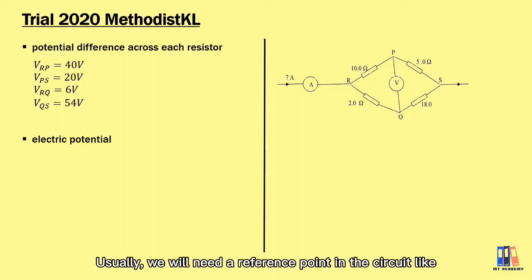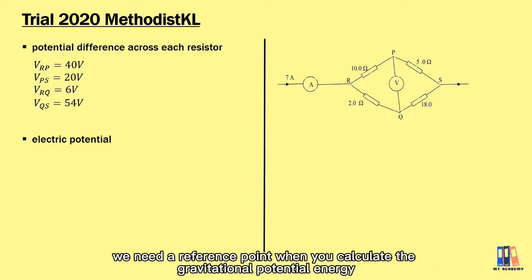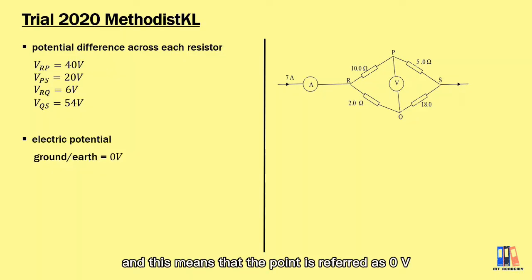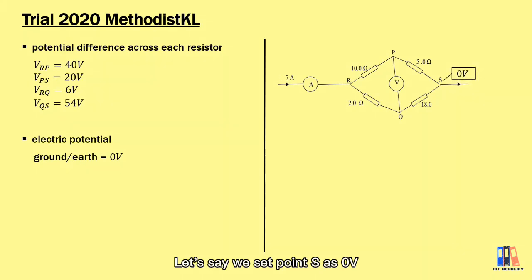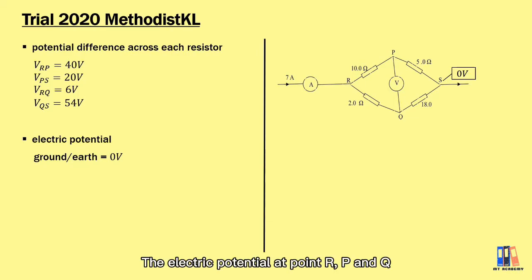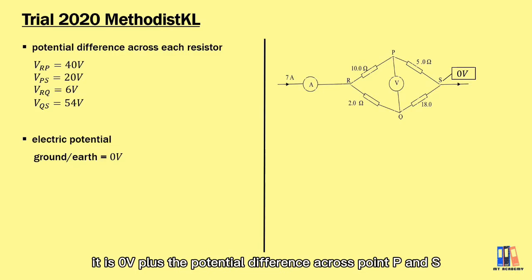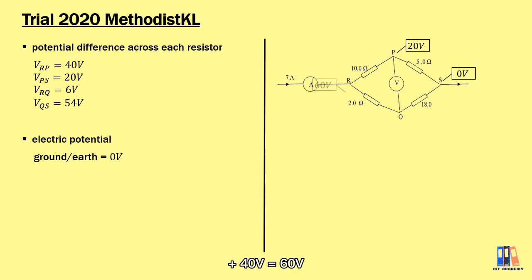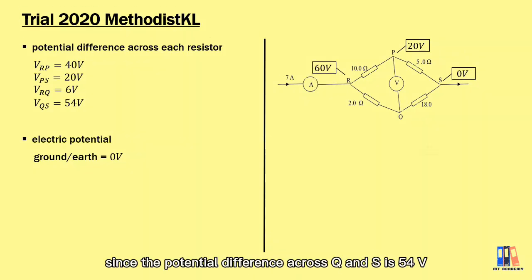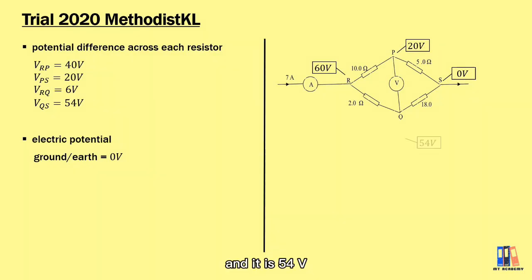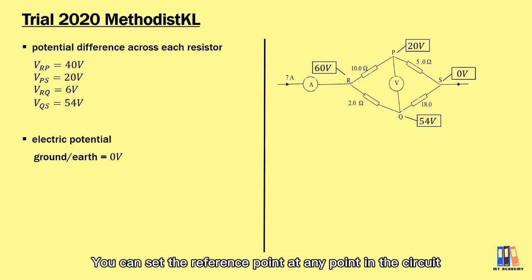Sometimes you are required to identify the electric potential at a certain point. We need a reference point in the circuit — similar to needing a reference when calculating gravitational potential energy. In electronics, we set one point as ground or earth, meaning it is referred to as zero volts. Let's set point S as zero volts. Current flows from higher potential to lower potential, so the potentials at points R, P, and Q are all higher than S. The potential at point P is zero plus 20 equals 20 volts, at point R is 20 plus 40 equals 60 volts, and at point Q is zero plus 54 equals 54 volts.